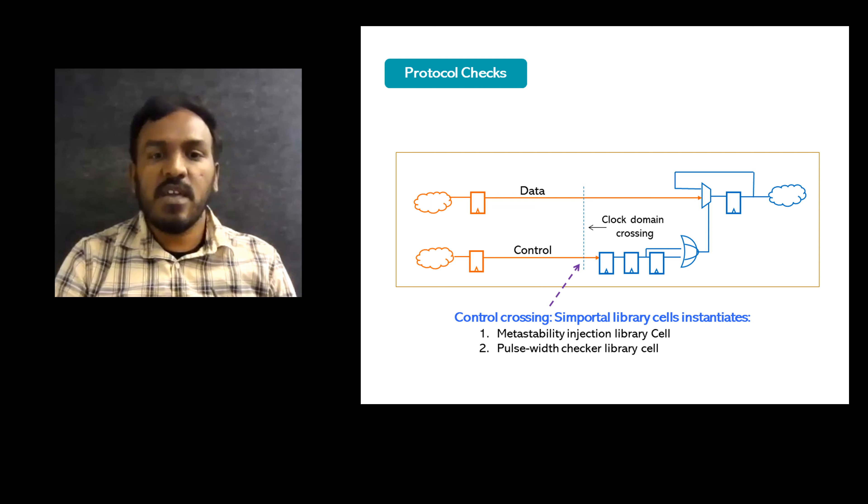Pulse width checks that verify that the width of the control signal is long enough for the data to be captured on the receive side. And gray code checks to verify that the FIFO controls are gray coded.